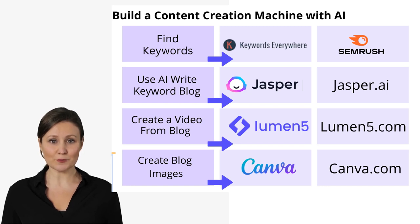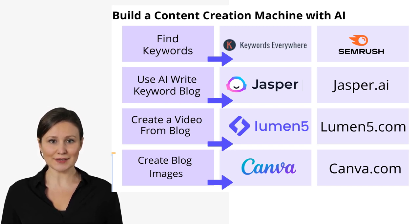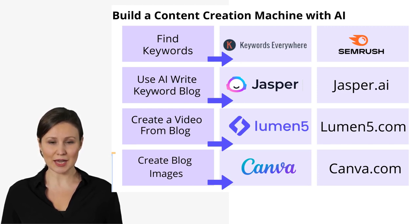Step 3: Create a video of that article using lumen5.com. Step 4: Now you are ready to take the article and use canva.com to create your social media images for all social profiles.